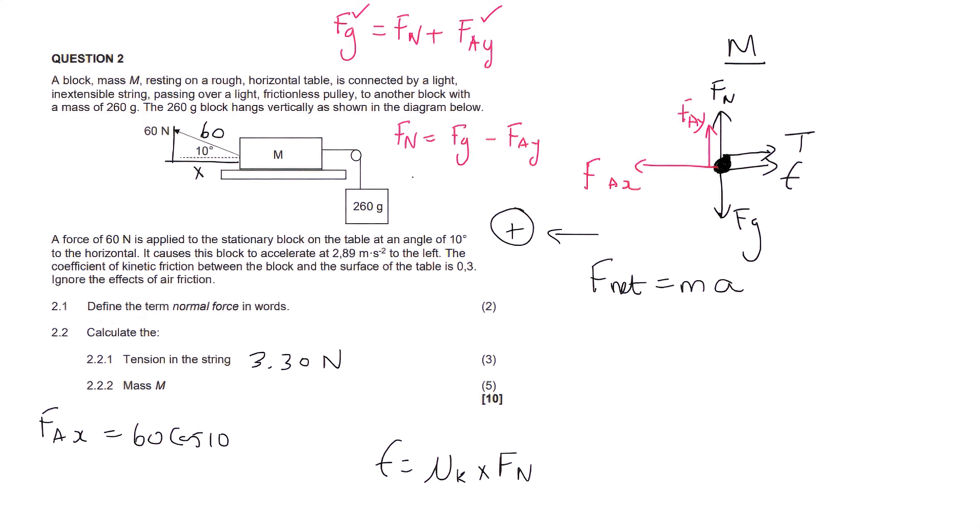Now, to work out the y component, you would also use this little triangle, but you would end up using sin. And so you would eventually get that that's equal to 60 sin 10. Okay. So if we had to go work out the normal force now, you would say normal force is equal to gravity, which is mass times 9.8, which we don't know the mass, but that's okay, minus 60 sin 10. And so now we have all three forces that we need.